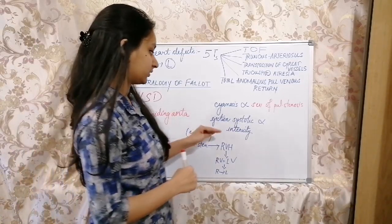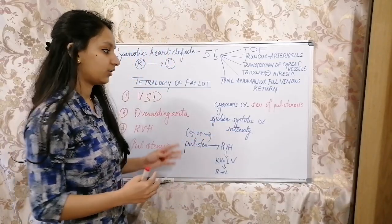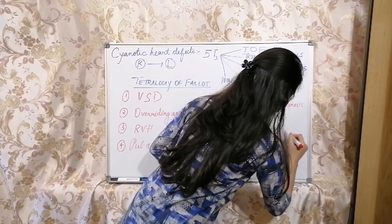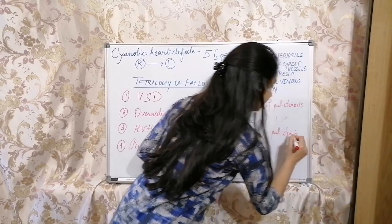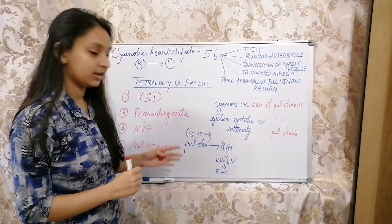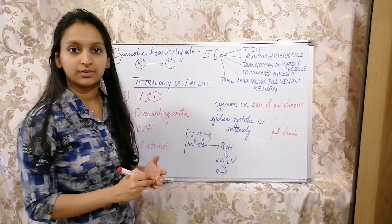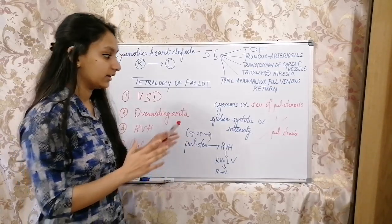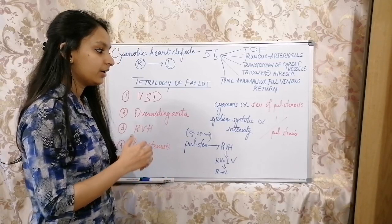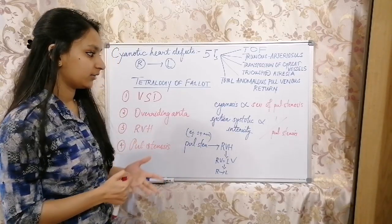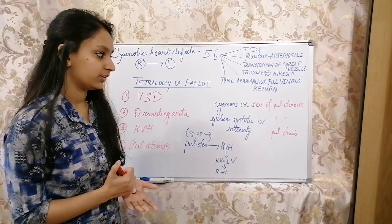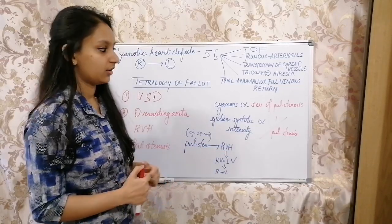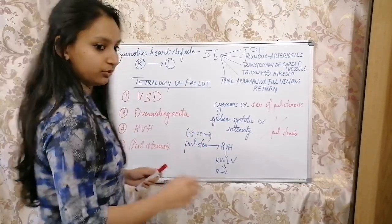What about ejection systolic intensity? They are inversely related to pulmonary stenosis. As blood is flowing through pulmonary artery due to pulmonary stenosis, there will be some difficulty, which results in an ejection systolic murmur. But that intensity is inversely related to pulmonary stenosis. If there is more pulmonary stenosis, the intensity of ejection systolic murmur will be less. These are the main things you have to keep in mind.